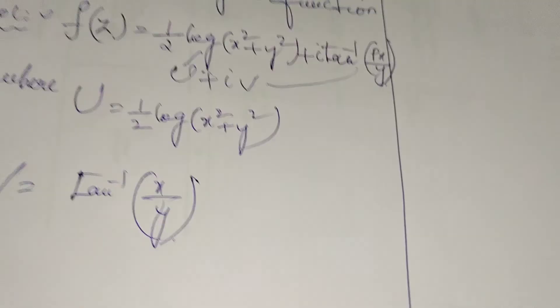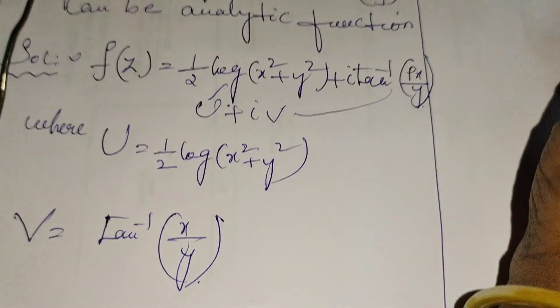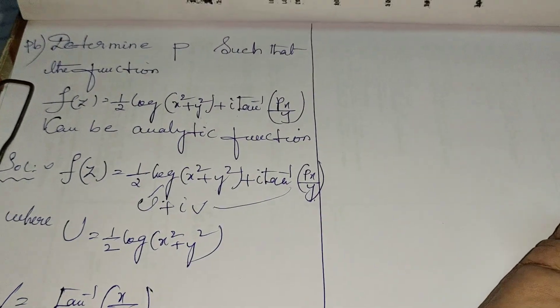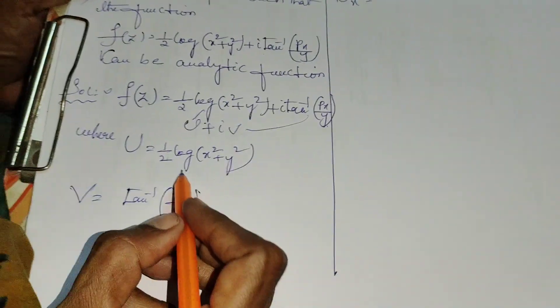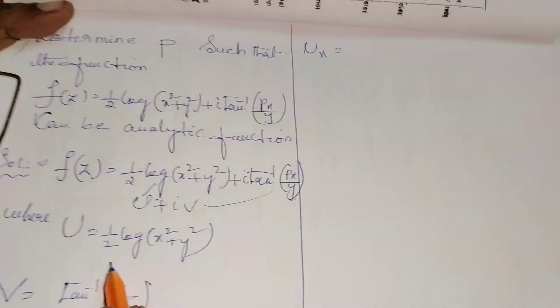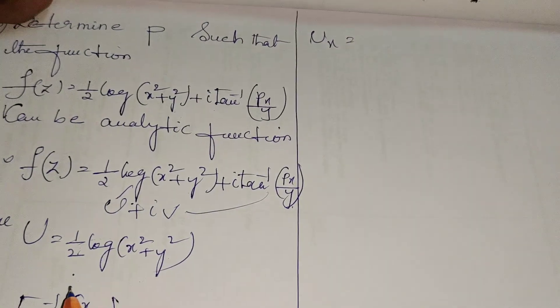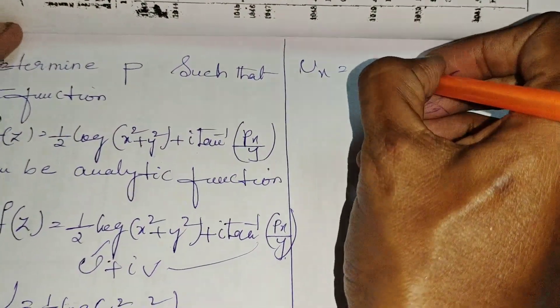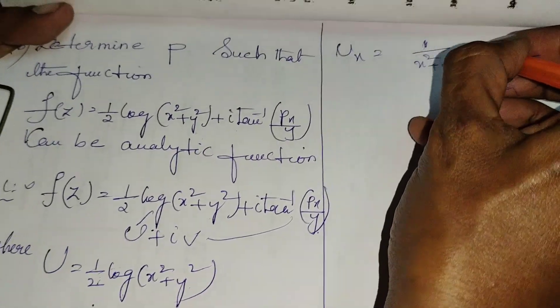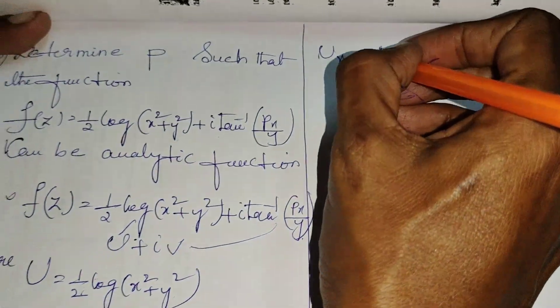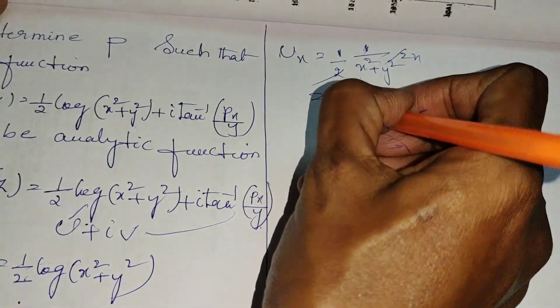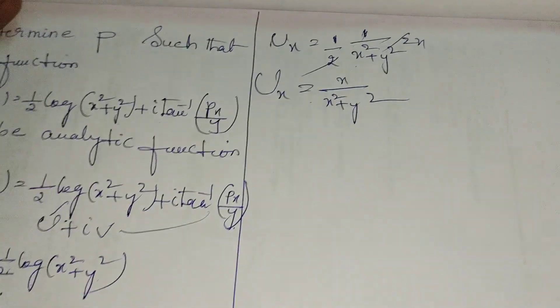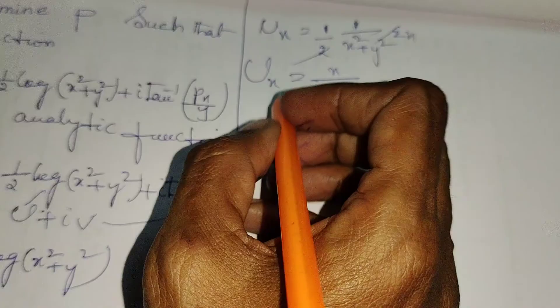Now we find the partial derivatives using Cauchy-Riemann equations. First, ux means differentiating u with respect to x. The derivative of log(x² + y²) is 1/(x² + y²), and the derivative of x² is 2x. The 1/2 and 2 cancel, giving us ux = x/(x² + y²).